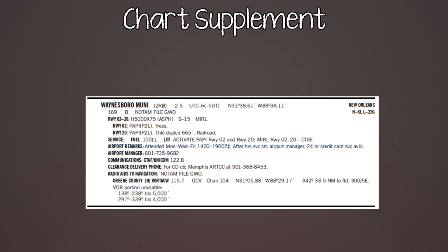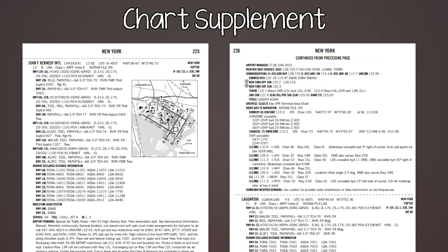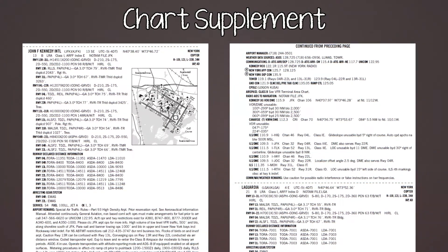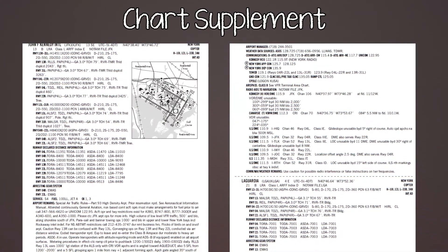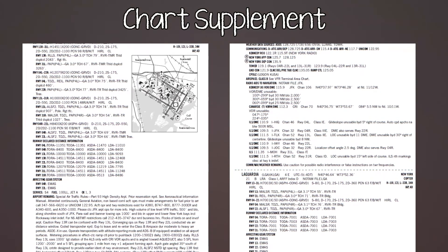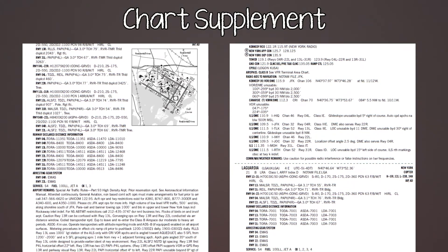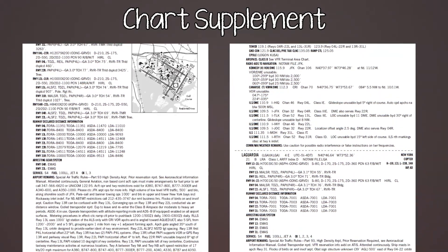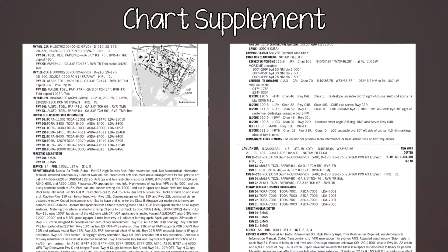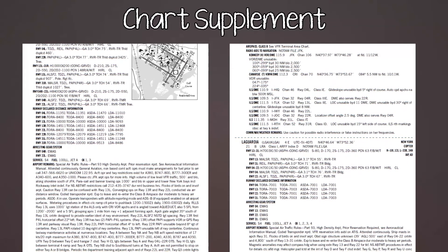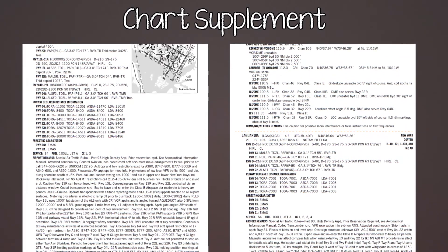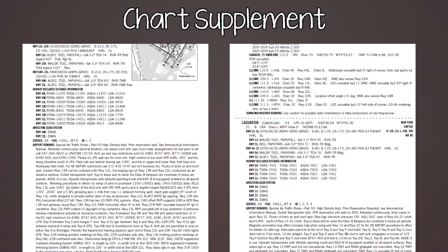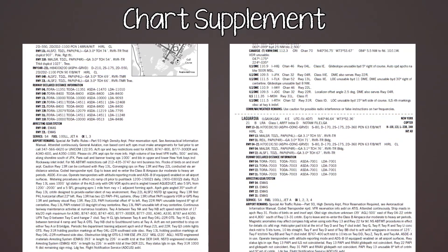For the runway lights at Waynesboro, you activate them on the CTAF frequency. Since they're medium intensity, the highest they'll ever go is five clicks. Of course the chart supplement also includes communication frequencies and VOR frequencies. For a more complicated airport, I won't go line by line — but if you're going somewhere busy or a bigger airport, make sure you read all the information and all the remarks.